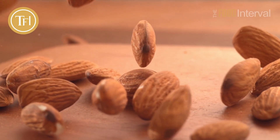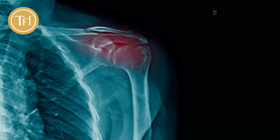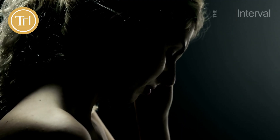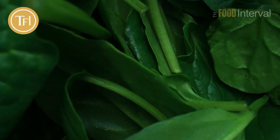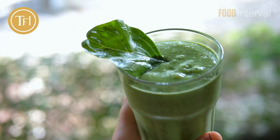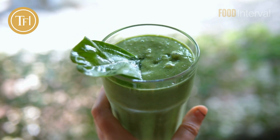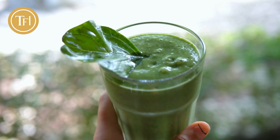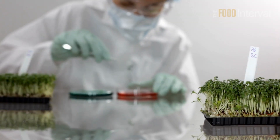Did you know that eating too many almonds could trigger joint pain, headaches, and irritable bowel syndrome? Your green smoothie with three handfuls of raw spinach and soy milk can cause the same problem. It's all because of oxalates — what are oxalates and why is no one talking much about it?